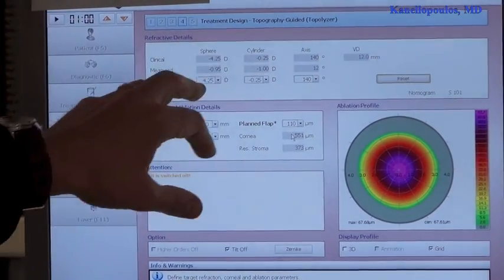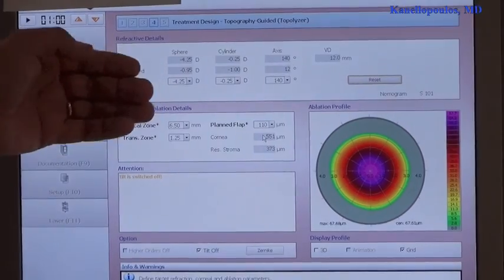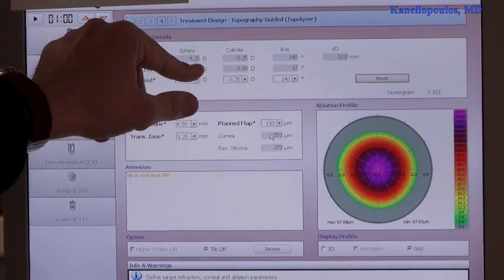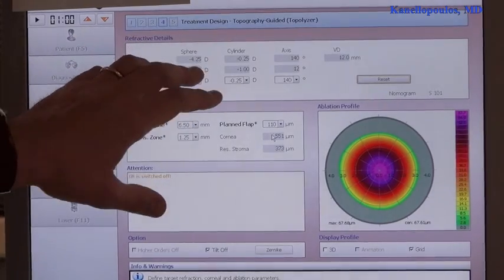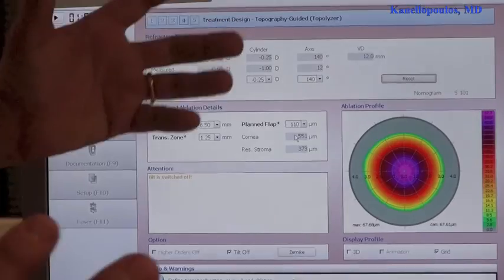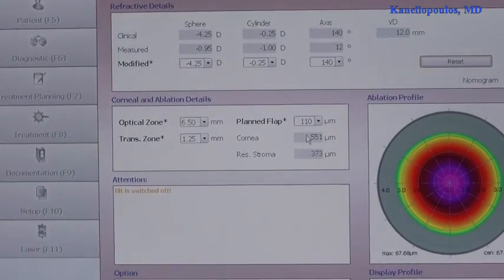But the pearl here is that the topographer, of course, the topographer can have sense, the spherical component very well, measures and suggests we treat one diopter of astigmatism at 12 degrees. So, this creates a little bit of leap of faith to the topographers.